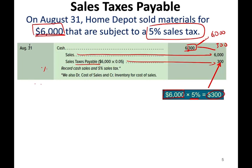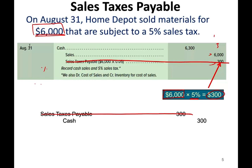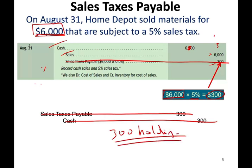Eventually the business will have to submit this $300 to the state, city, or county — in this case, to Harrisburg, the Pennsylvania state capital. When they cut the check, they debit sales taxes payable $300 and credit cash $300. All in all, the sales taxes payable is gone. What Home Depot ends up with is a debit to cash $6,000 and credit to sales $6,000 — exactly right, because they had a sale of $6,000 and were simply holding the $300 on behalf of the state.